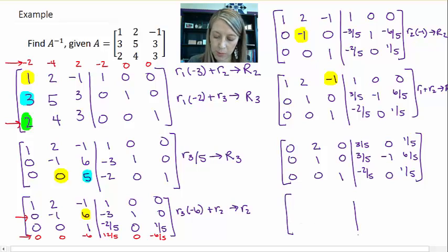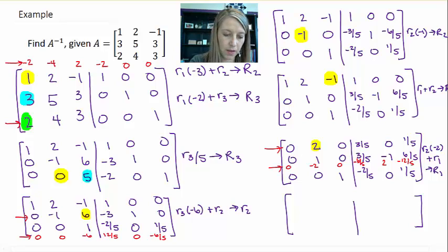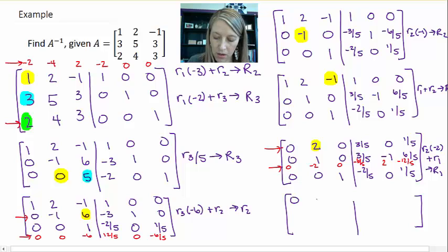And last but not least, I need to get a 0 where this 2 is. And so I need to do that by taking row 2 times the negative row 2 and adding it to row 1. And of course, that gets replaced with row 1. So let me do my scratch work in here. 0, negative 2, 0. Negative 6 fifths, positive 2, and negative 12 fifths. So I'm adding that guy and that guy.